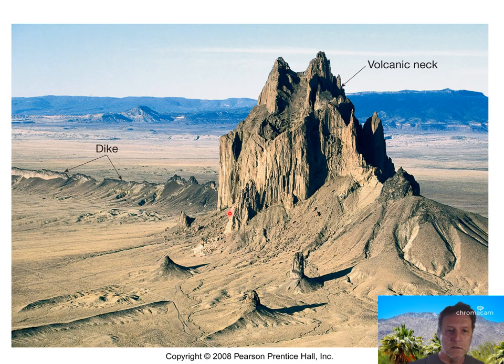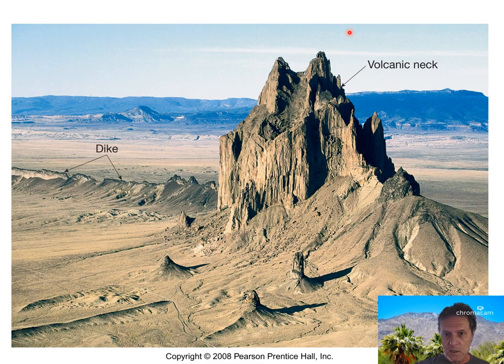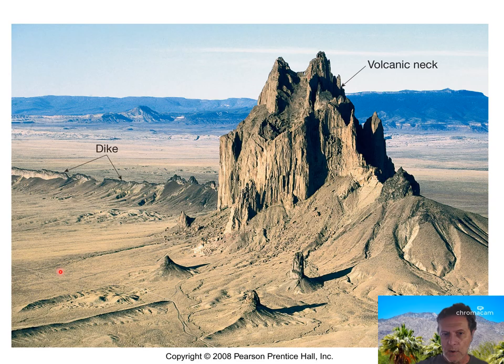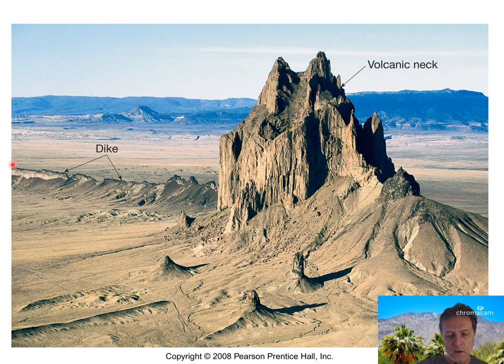Down in New Mexico, this is the volcanic neck of Shiprock in the northeast corner of New Mexico. There used to be a volcanic structure around this — what you see is actually solidified magma that filled up the volcanic neck or conduit or throat of the volcano. The volcanic structure has been stripped away by erosion, leaving only this very hard, resistant solidified magma in the center. A dike is a structure left after erosion of material around a fissure that's been filled with lava.